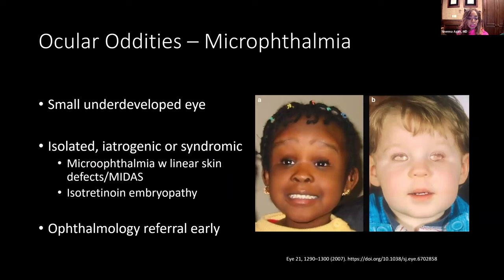Microphthalmia refers to small, underdeveloped eyes. It can be an isolated finding or iatrogenic — again related to isotretinoin, which we tend to prescribe as dermatologists. It can also be part of syndromes such as the MIDAS spectrum. MIDAS features microphthalmia and linear skin defects, which are essentially a form of aplasia cutis occurring on the head and neck. The linear skin defects tend to fade with time, being most prominent in infants and young children. If you notice both the skin finding and the ocular finding, refer to ophthalmology; they can also have cardiac complications requiring cardiology referral.